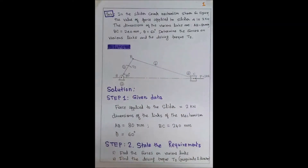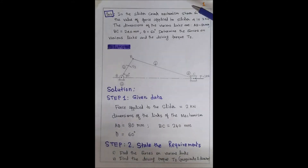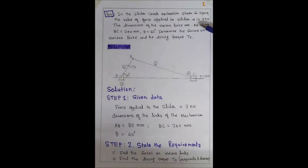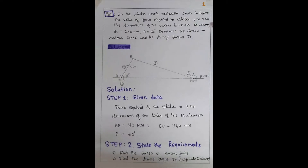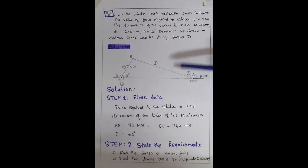Good morning students. I am going to explain static force analysis of the given mechanism. The given mechanism is a slider crank mechanism. The problem is: in the slider crank mechanism shown in the figure, the value of force applied to slider 4 is 2 kN. The dimensions are AB = 80 mm, BC = 240 mm, and theta = 60 degrees. We need to determine the forces on various links and the driving torque T2.